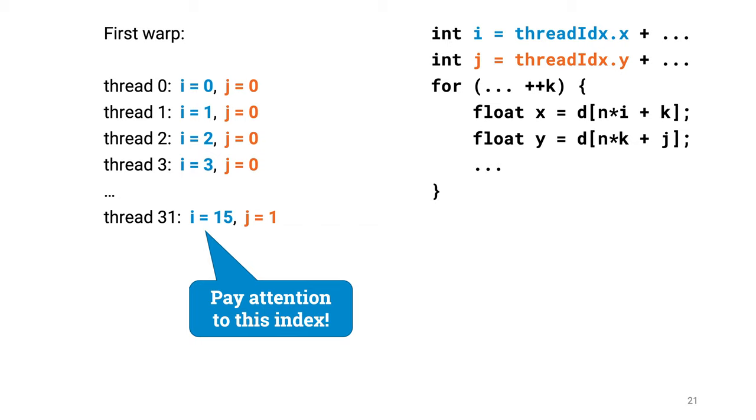First, we need to know which threads form a warp. With one-dimensional indexing, it's simple. The first 32 thread indexes is one warp, etc. With two-dimensional indexing, we just need to know that y-index is more significant than x-index, and then again the first 32-index pairs is one warp, etc. So for instance, the first warp of the first block will have j equal to 0 or 1, but i will range from 0 to 15.